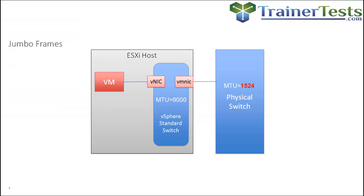Another important thing we need to configure in our vSphere standard switches is the maximum transmission unit, or MTU. An improperly configured MTU can have a negative impact. If a virtual machine sends a jumbo frame — these are larger frames than normal — the purpose of jumbo frames is to allow the virtual machine to send fewer frames, which means less addressing and less overhead. So jumbo frames can be really beneficial from a performance standpoint. If the virtual machine sends a jumbo frame and it arrives at the virtual switch configured with an MTU of 9000, the virtual switch can easily support that large jumbo frame.